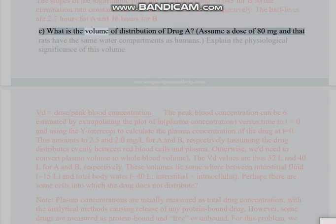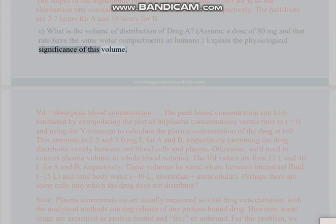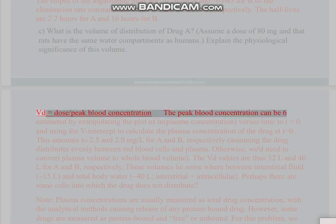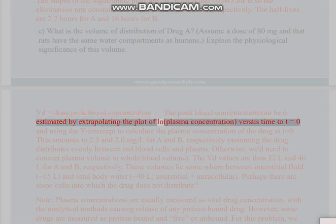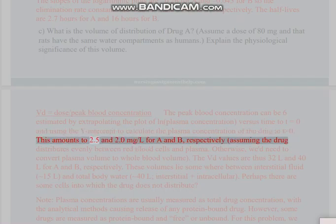Part C: What is the volume of distribution of drug A? Assume a dose of 80 mg and that rats have the same water compartments as humans. Explain the physiological significance of this volume. VD equals dose divided by peak blood concentration. The peak blood concentration can be estimated by extrapolating the plot of ln(plasma concentration) versus time to t=0 and using the y-intercept to calculate the plasma concentration of the drug at t=0. This amounts to 2.5.